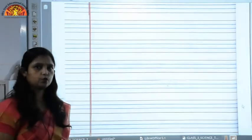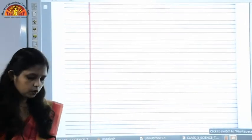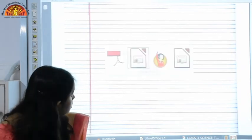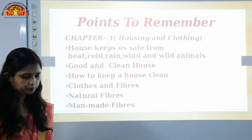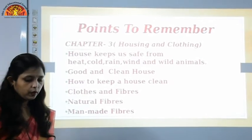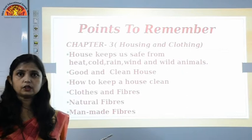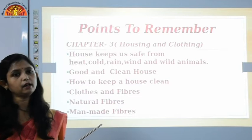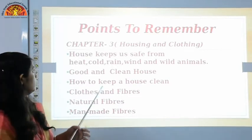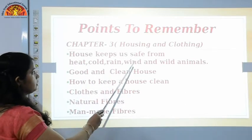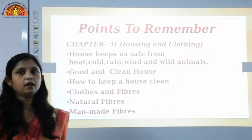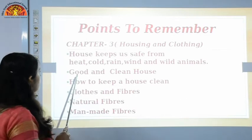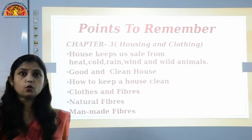This was the revision of chapter 2. Now we move to the revision of chapter 3. Open your books, page number 22 — chapter 3, Housing and Clothing. We know that the three most important things we need to live are clothing, housing, and food. We have already discussed food, so here we will discuss housing and clothing. A house provides us shelter and keeps us safe from heat, cold, rain, wind, and wild animals. It is very important to have a clean and good house.